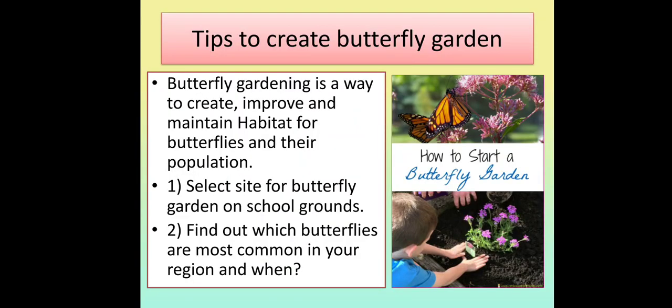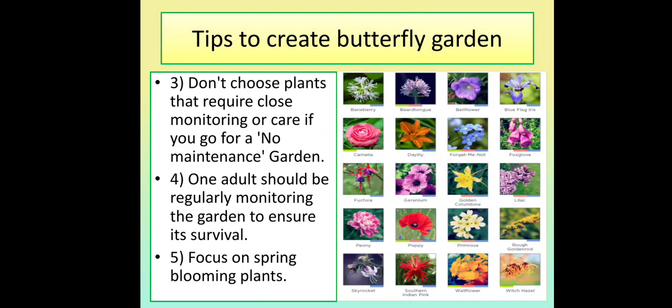Tips to create a butterfly garden: Butterfly gardening is a way to create, improve and maintain habitat for butterflies and their population. Select a site for the butterfly garden on school grounds. Find out which butterflies are most common in your region and when. Don't choose plants that require close monitoring or care if you prefer a no-maintenance garden. One adult should be regularly monitoring the garden to ensure its survival.